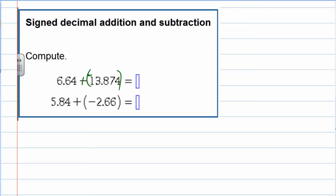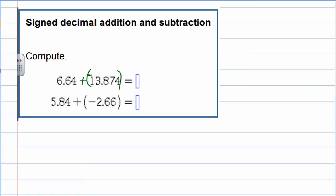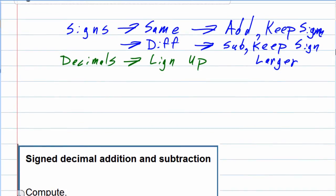So this is the keep change change, where we kept the first sign, changed subtraction to addition, and then changed the sign on the second one. This gives us now different signs. I've got a positive 6.64 and a negative 13.84. The signs are different, that means I'm going to have to subtract.